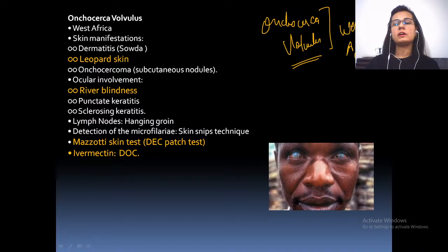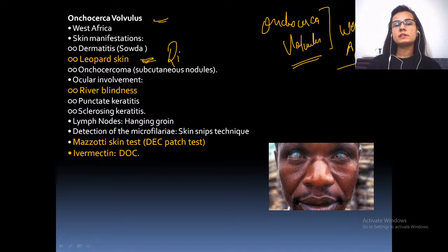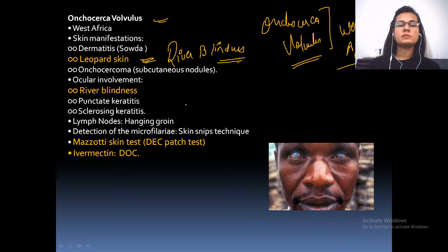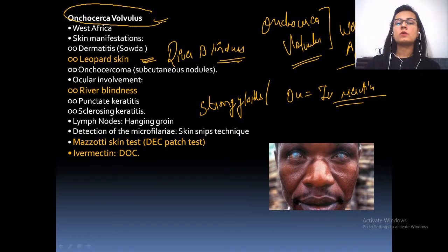Onchocerca volvulus is mainly present in West Africa. It causes river blindness and presents with leopard-like skin. The diagnostic test is the Mazzotti skin test. Drug of choice is ivermectin, not albendazole.